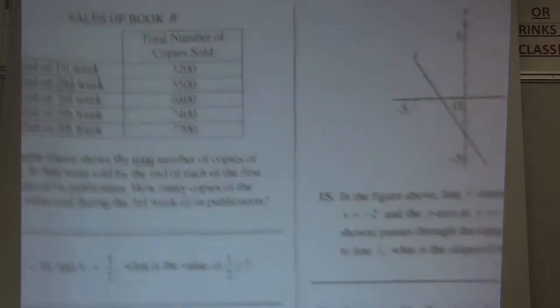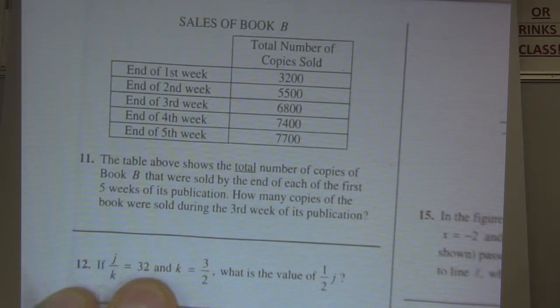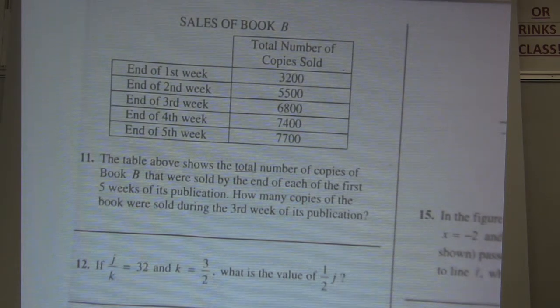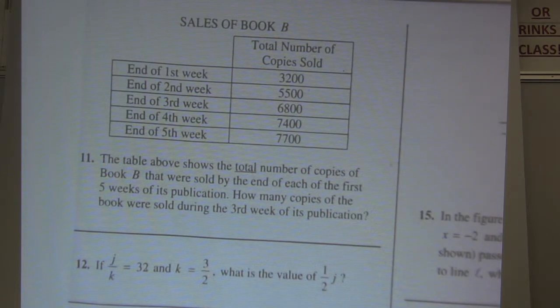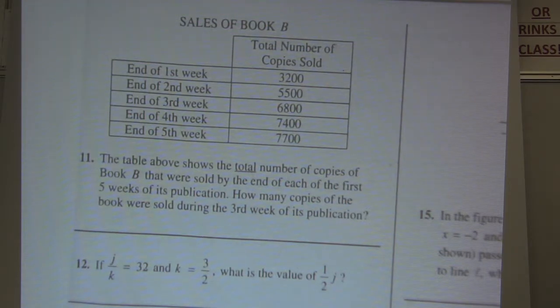Okay, number 11. Okay, there we go, number 11. The table above shows the total number of copies of Book B that were sold by the end of each month of the first five weeks of publication. How many copies of the books were sold during the third week of the publication?